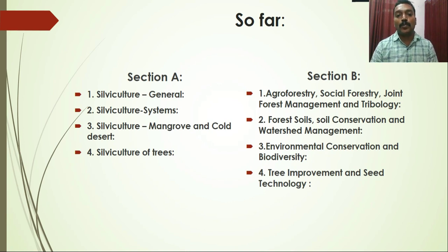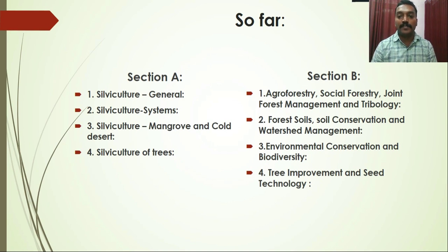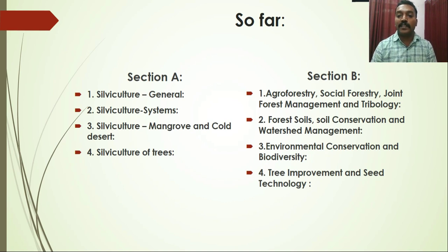In Paper 1, Section A, there are 4 chapters we dealt with: Silviculture General, Silviculture Systems, Silviculture of Mangrove and Cold Desert, and Silviculture of Trees. Under Section B, we covered Agroforestry, Social Forestry, Joint Forest Management and Tribology, followed by Forest Soils, Soil Conservation and Watershed Management, Environmental Conservation and Biodiversity, and finally Tree Improvement and Seed Technology.